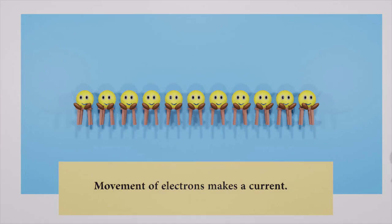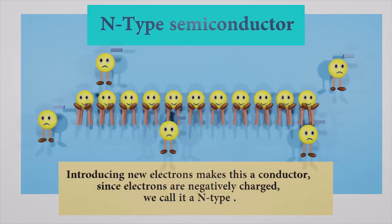Movements of free electrons make a current. Introducing new electrons makes this a conductor. Since electrons are negatively charged, we call this an N-type semiconductor.